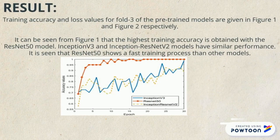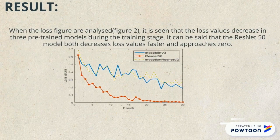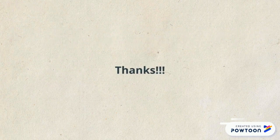Accuracy graph: the accuracy graph of our model shows that accuracy moves up nearly to one during the training process. The loss graph shows that the loss in our model reduced down nearly to zero during the training process. That's all for everything.